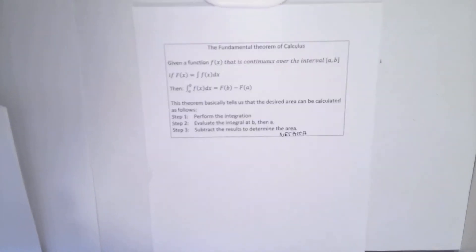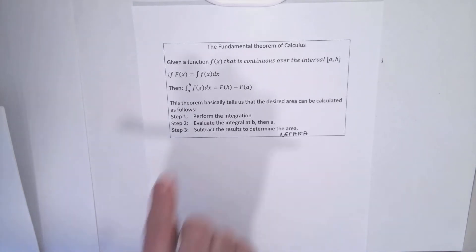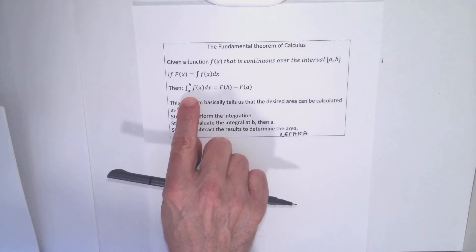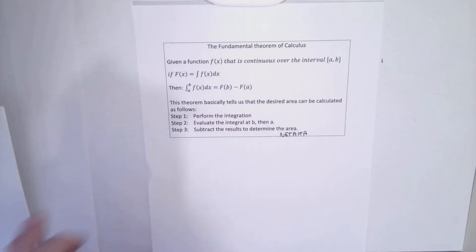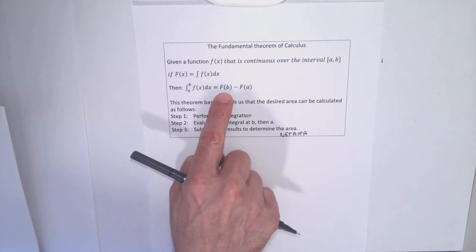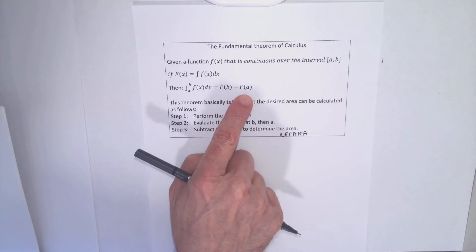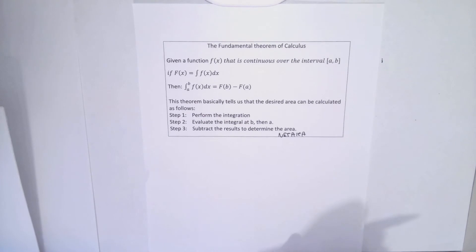The rest of section 5.4 is just doing the homework. We did all the theory in the first part of the video. Basically the theory is: if we're given a definite integral, definite integrals calculate net areas. To calculate the net area, we perform the integration, plug in the top number and the bottom number into the integral, and subtract. It's just doing the integration that could be ugly.